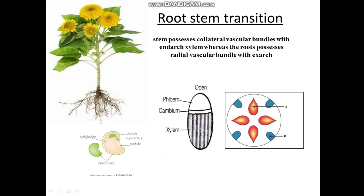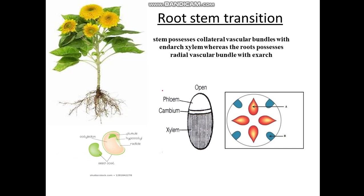Hello dear students, today we will study about root-stem transition. The stem possesses a collateral vascular bundle and the root possesses a radial vascular bundle. In stem the vascular bundle is of the endarch type, and in roots the vascular bundle has exarch xylem. This is a radial vascular bundle found in roots, and this is a conjoint vascular bundle found in stem.